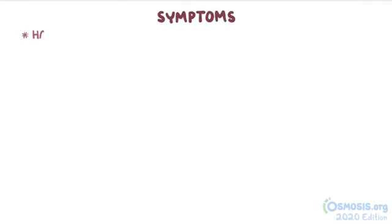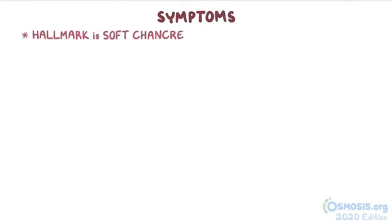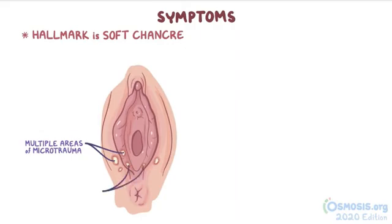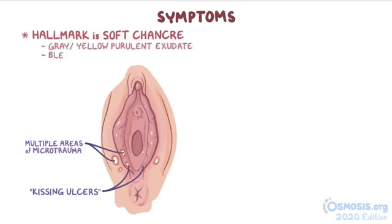A hallmark symptom of the disease is the soft chancre. Multiple ulcers may be noted as the result of multiple areas of microtrauma, or as a result of direct contact between two adjacent areas resulting in kissing ulcers. The base of the ulcer is covered with a gray or yellow purulent exudate and bleeds easily when scraped.